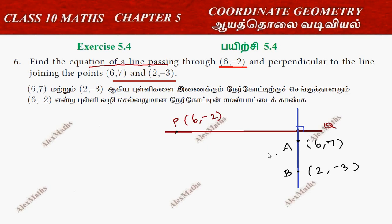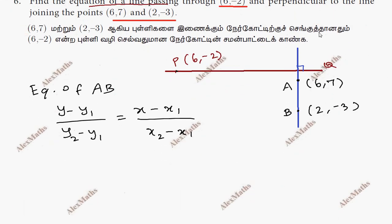Equation of AB. So the equation of AB: (y - y1) / (y2 - y1) = (x - x1) / (x2 - x1). If we have points x1, y1 and x2, y2. So (y - y1) / (y2 - y1) = (x - x1) / (x2 - x1).